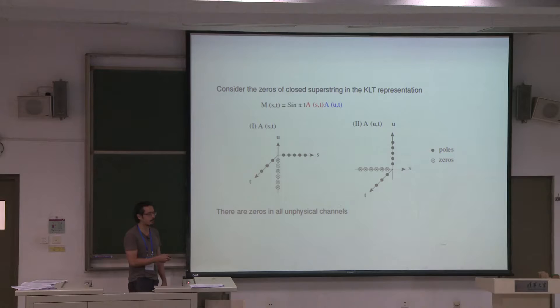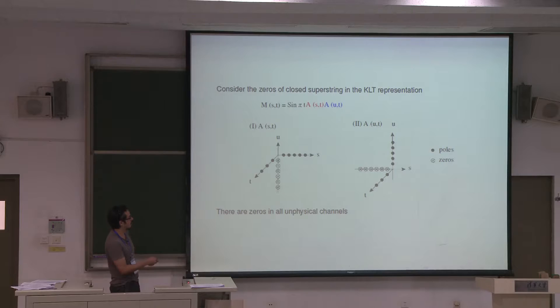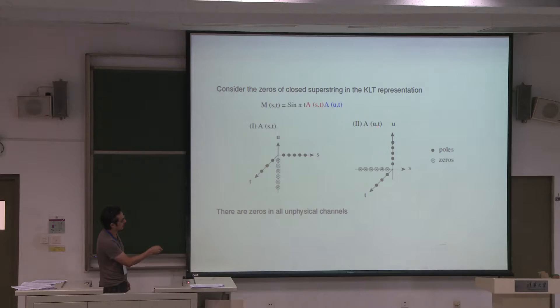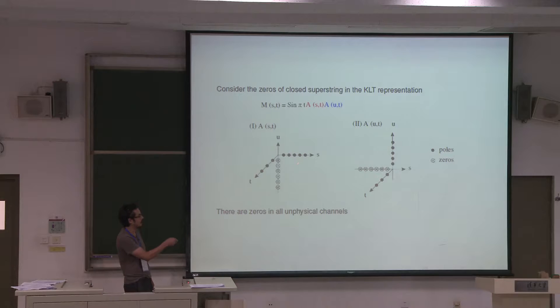For the open string amplitude on the right-hand side, there are poles in the S and T channels and zeros in the U channel. On the left-hand side, there are poles in U and T channels and zeros in U. This is perfectly reasonable — all these zeros are supposed to be there to cancel the double poles. Now if I just flip — meaning I flip the signature, putting S, T, U to negative S, negative T, negative U — then the positions of poles and zeros flip into a new form: zeros that were in the negative U channel now become in the positive U channel.